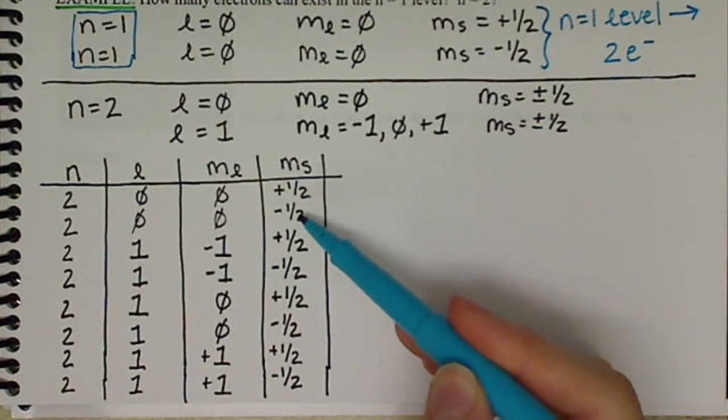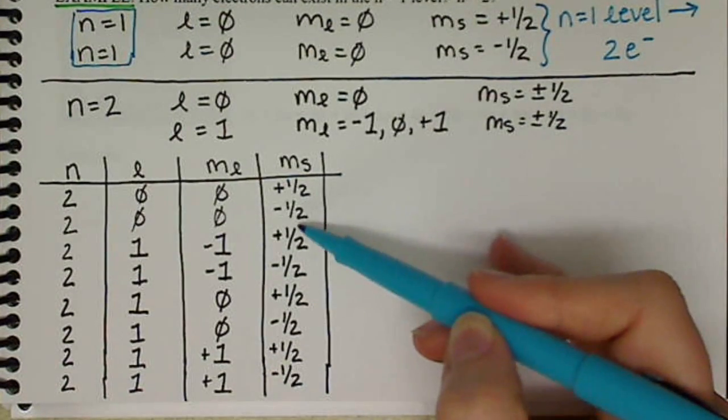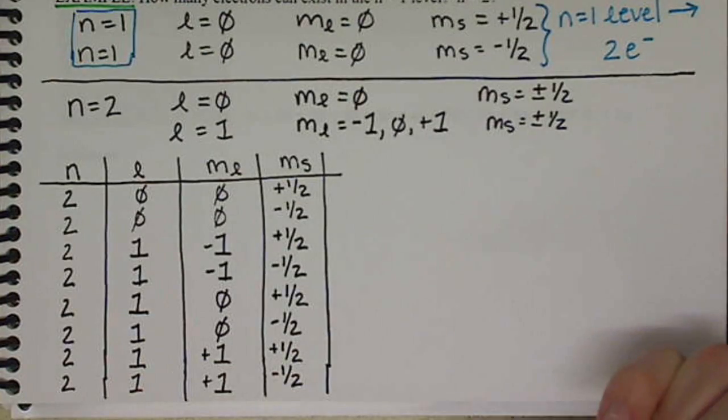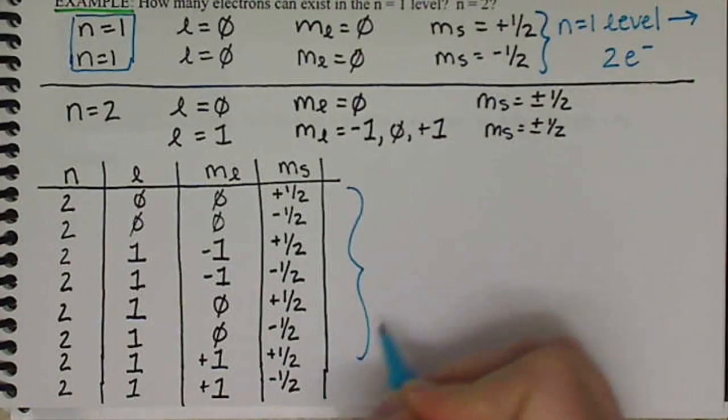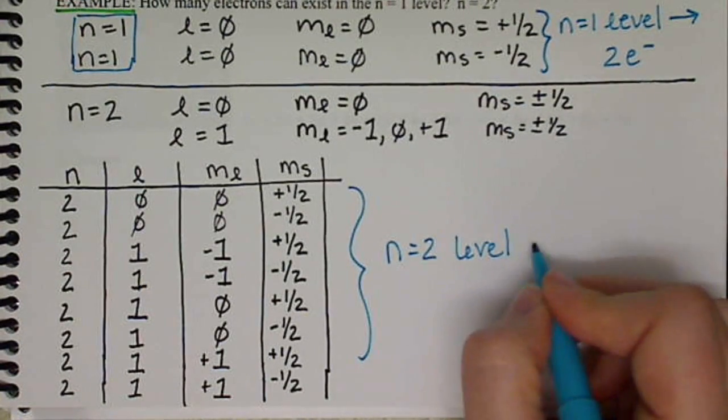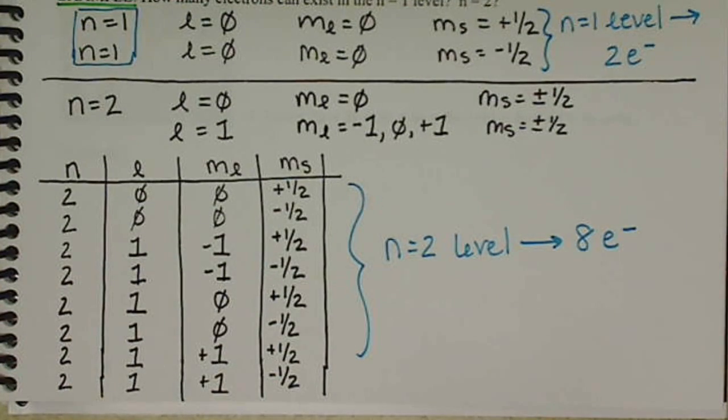So each one of these rows represents an electron. We have 1, 2, 3, 4, 5, 6, 7, 8. So in the n equals 2 level, we have 8 electrons.